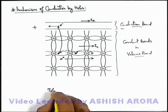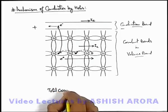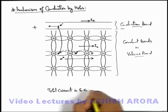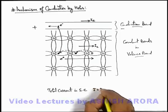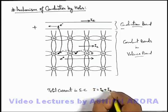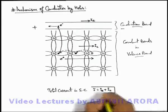Then we can write that total current in semiconductor can be given as I = I_e + I_h. Both are added because the two are in same direction.